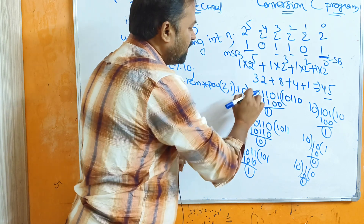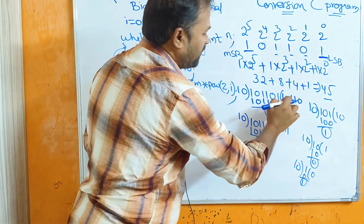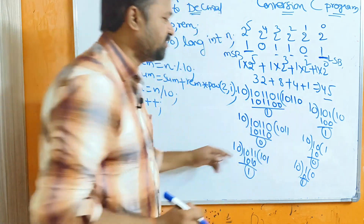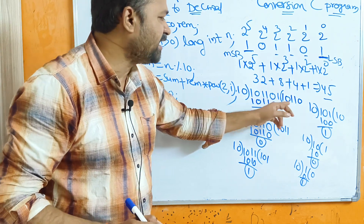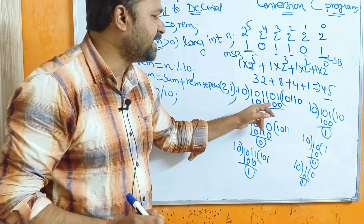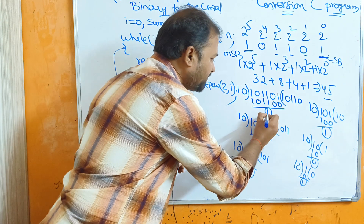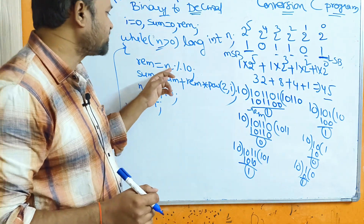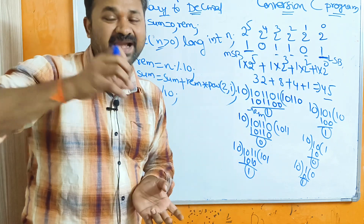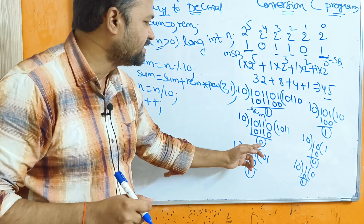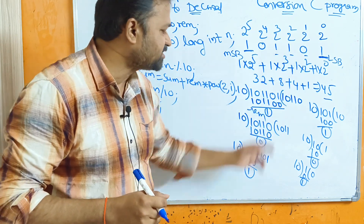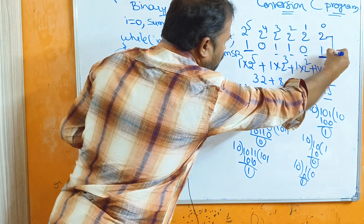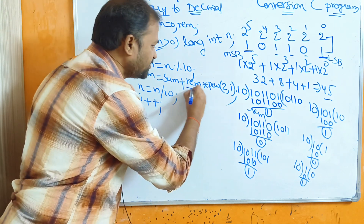For example, with n = 101101, performing modulo 10 gives a remainder of 1. In the first iteration this 1 is the last bit. In the second iteration the last bit would be 0, in the third iteration it would be 1, and so on. We then multiply this remainder by the corresponding power of 2.